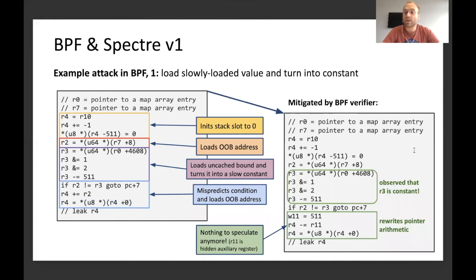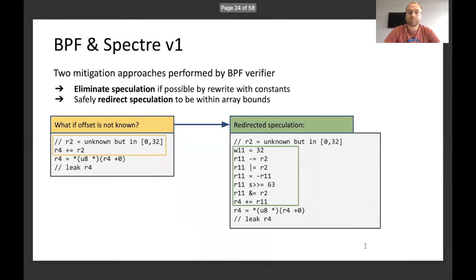How does the verifier mitigate this attack? Basically, the verifier will observe that this calculation will resolve into a constant, and then it will rewrite the pointer arithmetic into pointer arithmetic using a constant value, so that there's nothing to speculate anymore. It will basically eliminate speculation where possible by rewriting those instructions with constants.